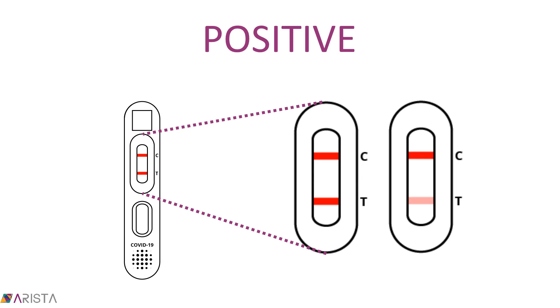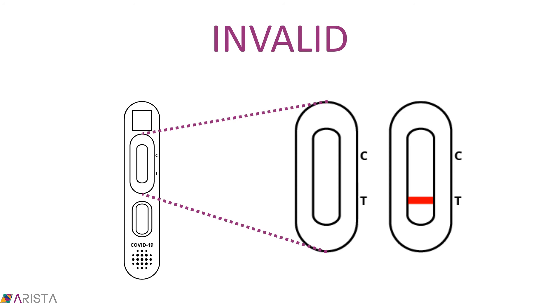If both the C line and T line display visible color bands, even if faint, then the test result is positive and you most likely are infected with COVID-19. If the C line is blank, then the test result is considered invalid.